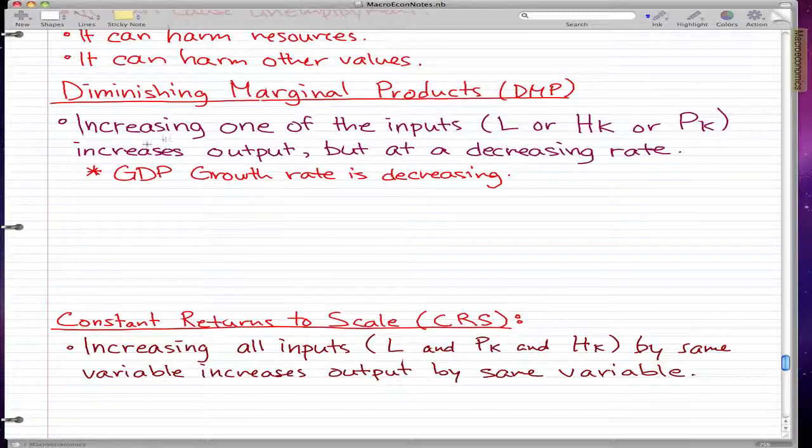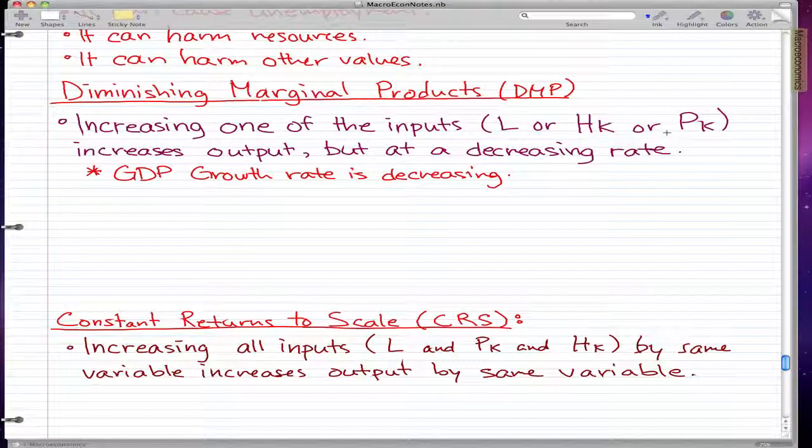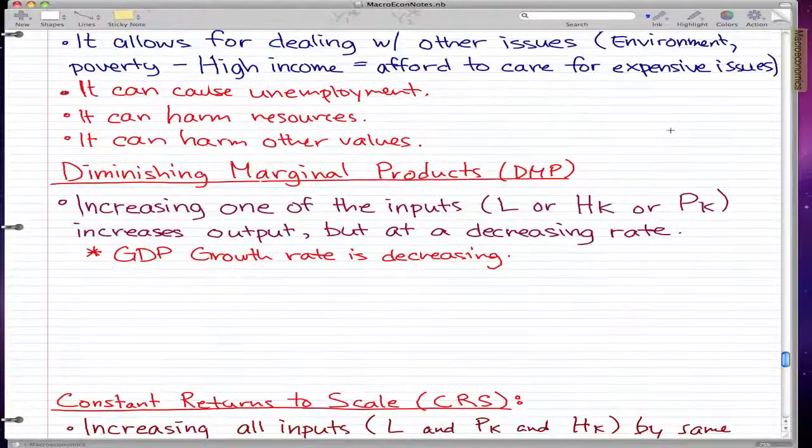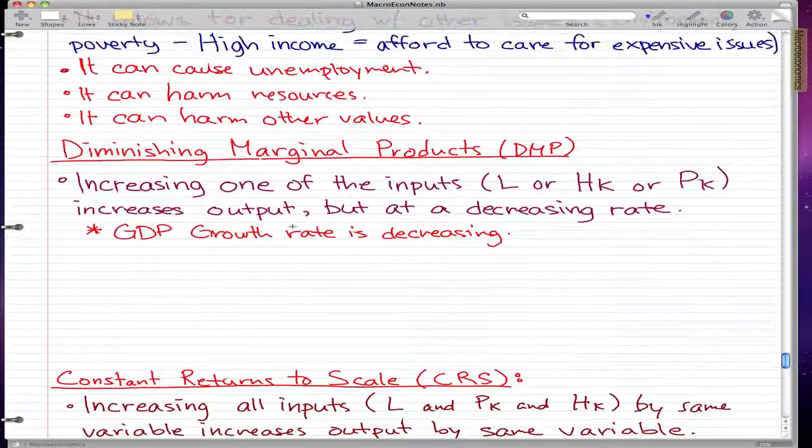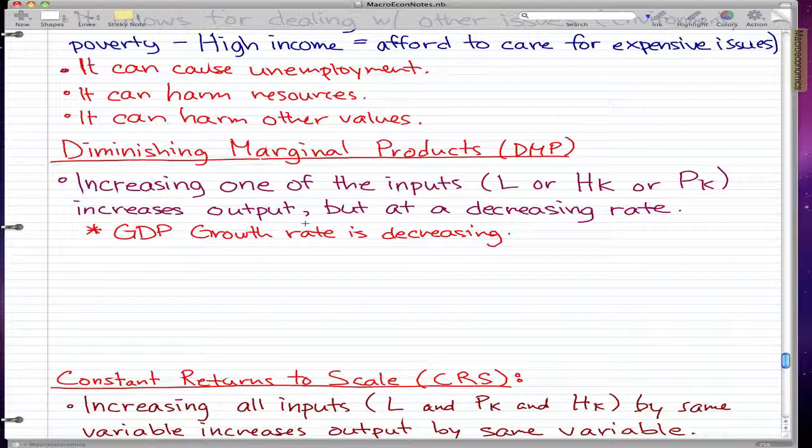What you need to know is that by increasing one of the inputs—labor, human capital, or physical capital, the things that we talked about before—we increase the output, but at a decreasing rate. So GDP growth rate is decreasing.